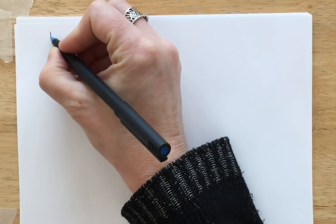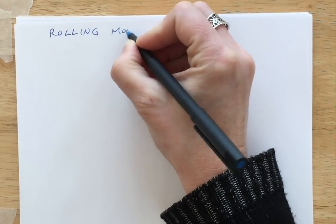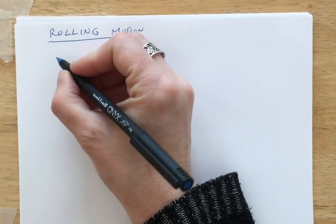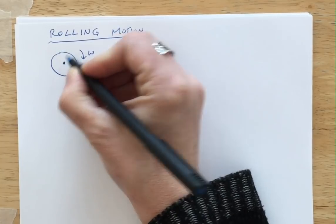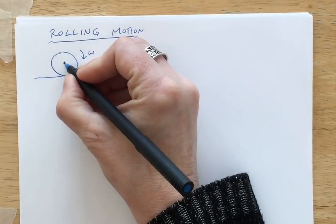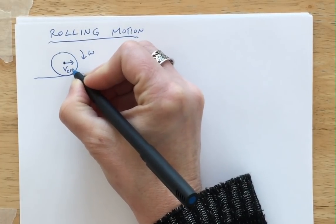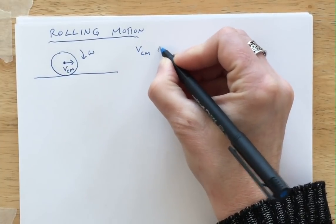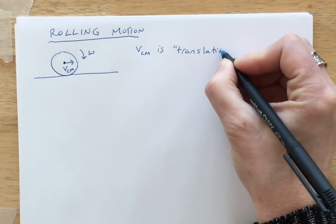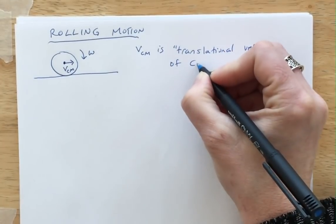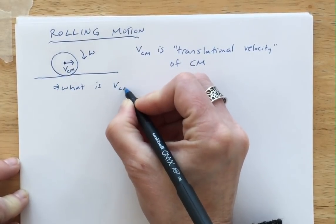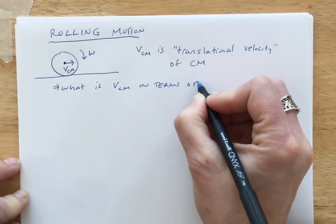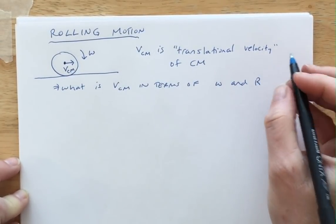In this video we're going to be talking about rolling motion and conservation of energy with rotation. Starting with rolling motion: if we imagine a wheel rotating with some angular velocity omega, and we look at the center of the wheel — a uniform wheel on the ground — there's going to be some velocity of the center of mass, V_cm. The question is: what is V_cm in terms of omega and r, the radius of the wheel?